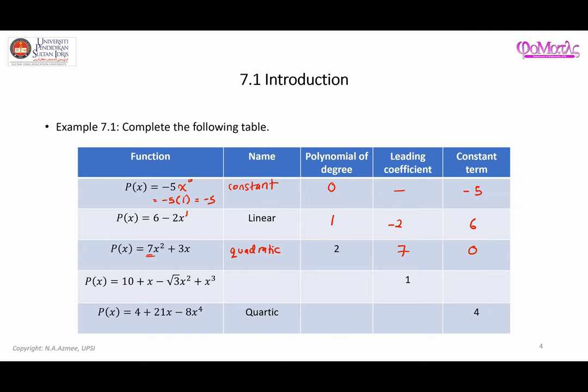For the next entry, the highest power is 3, so this is a cubic function — polynomial of degree 3. The leading coefficient is 1, meaning 1 times x to the power of 3, and the constant term is 10. Finally, the last entry is a quartic function — polynomial of degree 4. The leading coefficient is negative 8, and the constant term is 4.